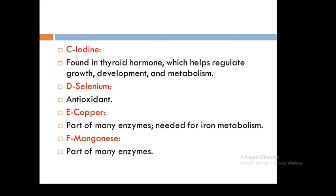Copper is part of many enzymes and is needed for iron metabolism. It is found in legumes, nuts and seeds, whole grains, organ meats, and drinking water. Manganese is also part of many enzymes and is found in many foods, especially plant foods.